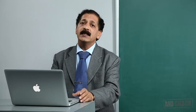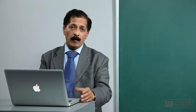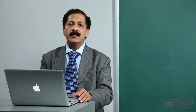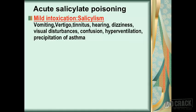Next we discuss acute salicylate poisoning. If the intoxication is mild, there is a word for this — salicylism — in which you get various symptoms including vomiting and symptoms associated with the vestibular and cochlear system: vertigo, tinnitus, hearing defects, dizziness, visual disturbances, confusion, and finally hyperventilation. If the patient already had asthma, it would get precipitated. This is salicylism — mild intoxication.